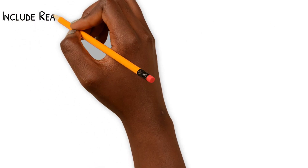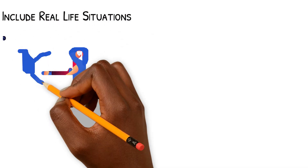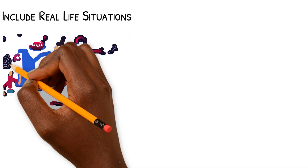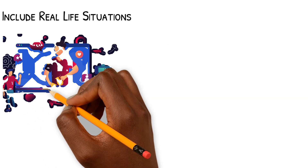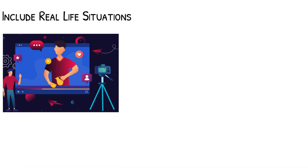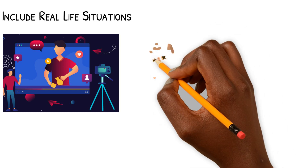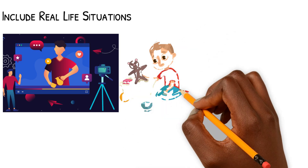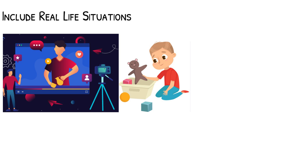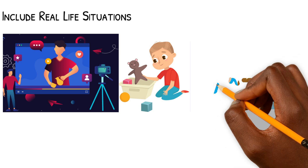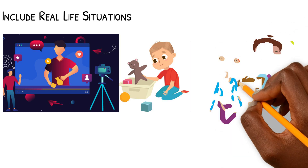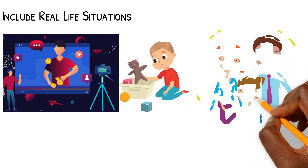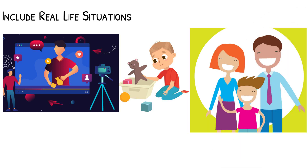Include real-life situations. People best engage with videos that establish real-life situations to which they can relate. Think about how your customers use your products or services and try to showcase these situations in your marketing scripts. For example, a company showcases a video that demonstrates how difficult it is to store all your children's toys, especially traditional playhouses and play kitchens, in your home with limited space. Most parents can relate to this type of situation because they live it every day. The customers can identify with the problem presented in the marketing video and saw the value in the solution.